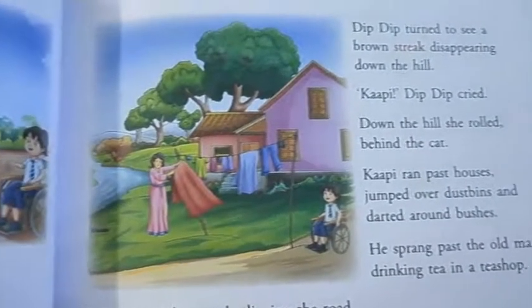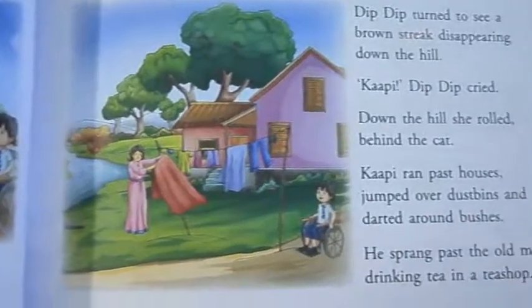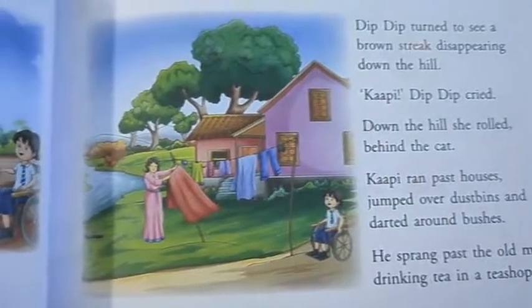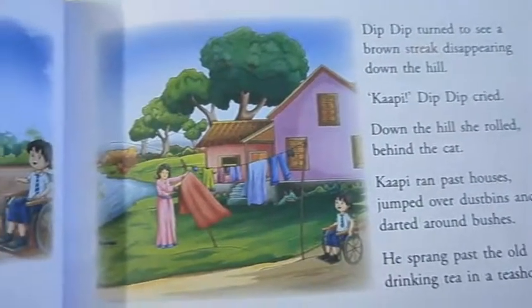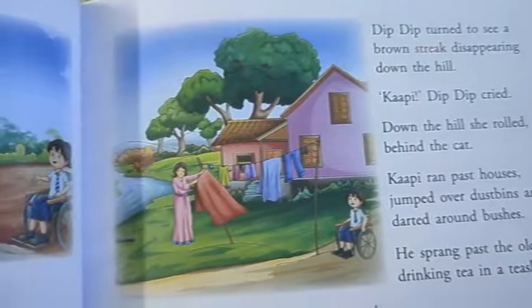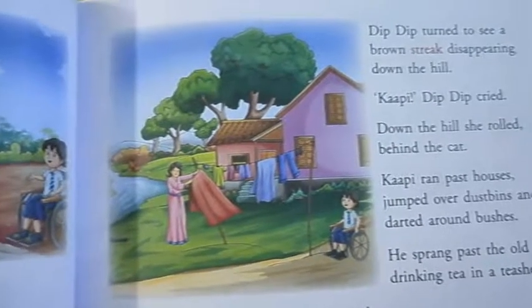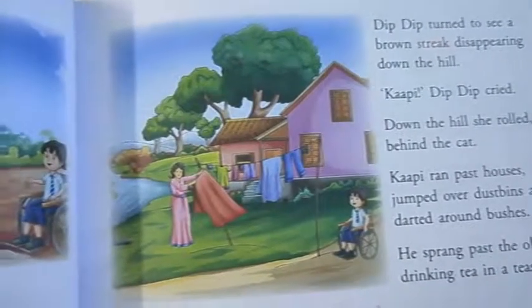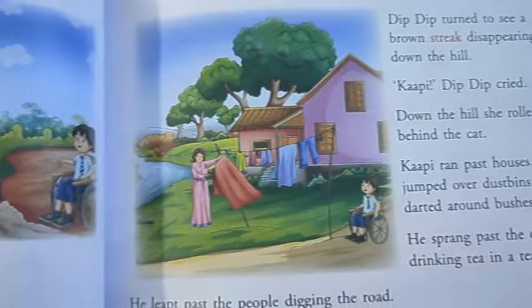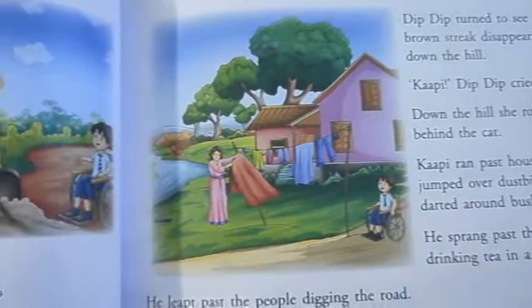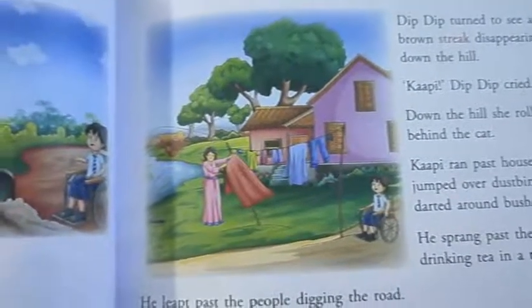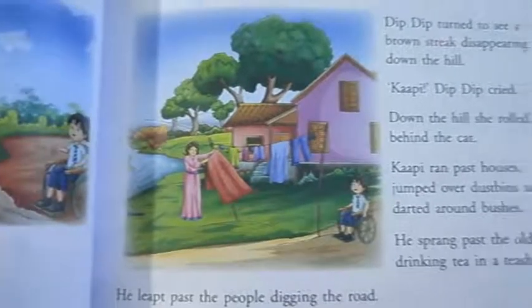So let's see what happens. In the last part, we read that Dip Dip had met a lady who was drawing clothes and she had pointed to something — a brown streak. Now let's see what she is saying.